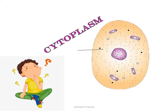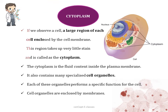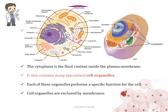Now let's see about cytoplasm. A large region of each cell is enclosed by a cell membrane, and this region takes up very little stain. The jelly-like, colorless, semi-fluid substance seen between the plasma membrane and the nuclear membrane is called cytoplasm — that is, cytoplasm is the fluid content inside the plasma membrane. The cytoplasm also contains many specialized cell organelles like Golgi apparatus, endoplasmic reticulum, ribosomes, and mitochondria.